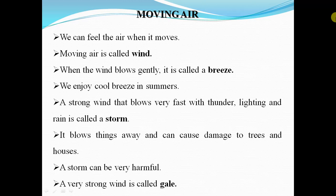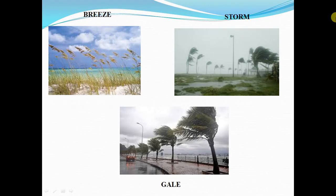A storm can be very harmful. A very strong wind is called a gale. You can see the image of breeze — a gentle wind; strong wind, which can destroy trees and houses; and gale, a very strong wind.